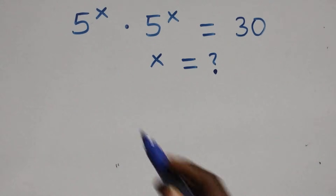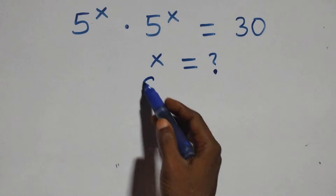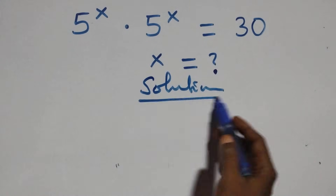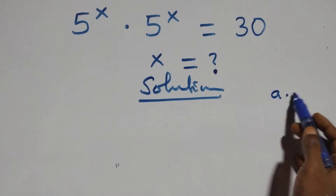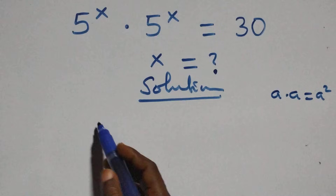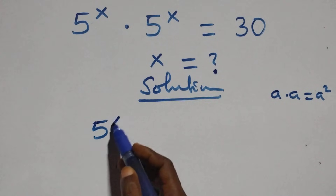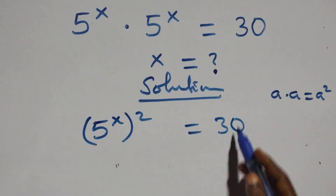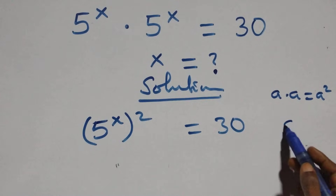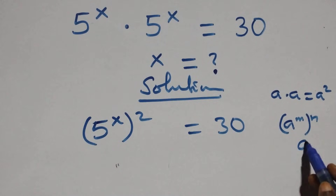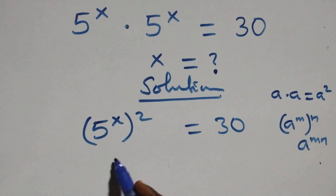Hello, you're welcome. How to solve this nice exponential equation. What we have here follows: we have a times a, which is the same as a squared. This same thing — when we have a raised to power m, raised to power n, this is the same as a raised to power m·n, as the powers multiply.